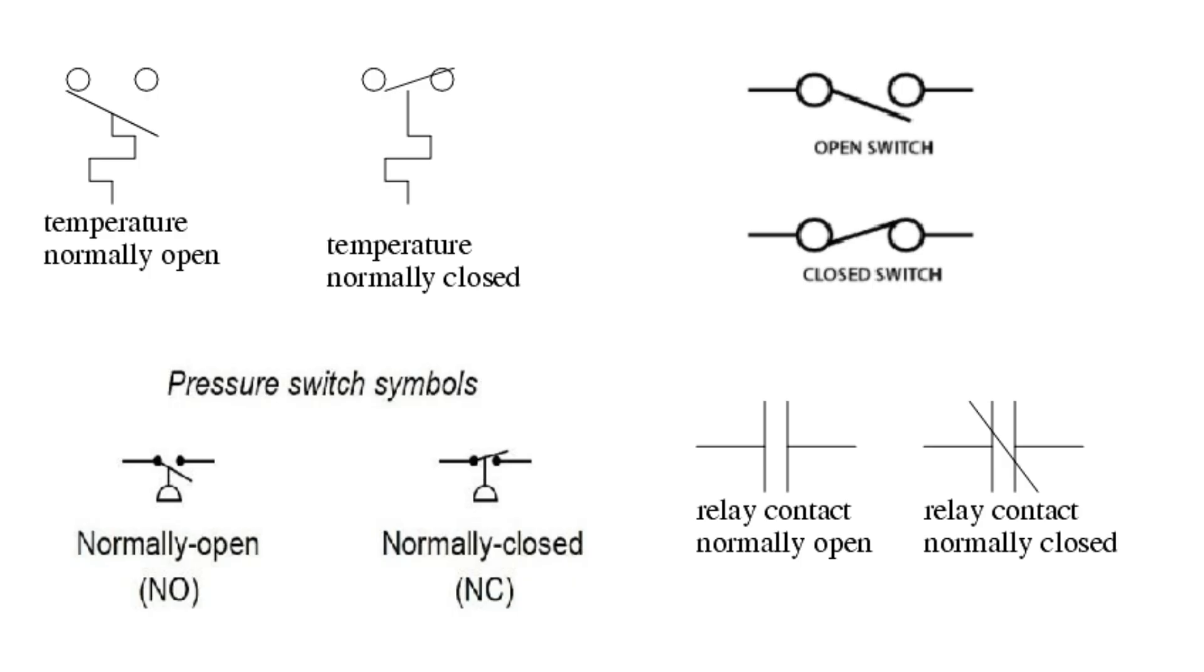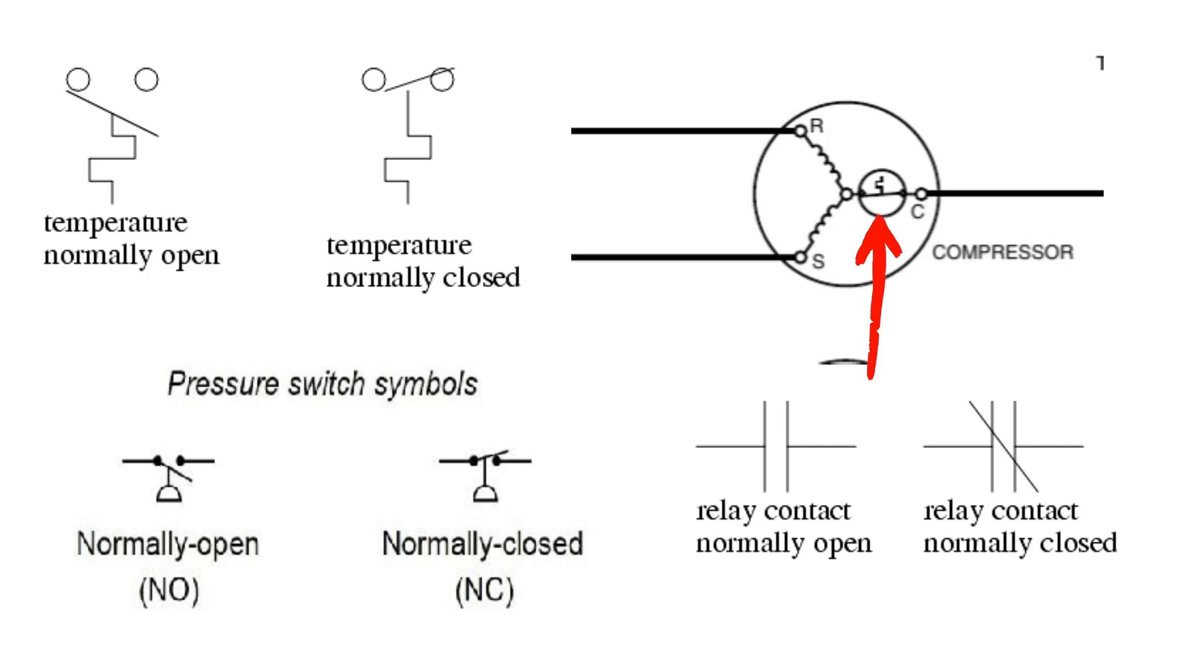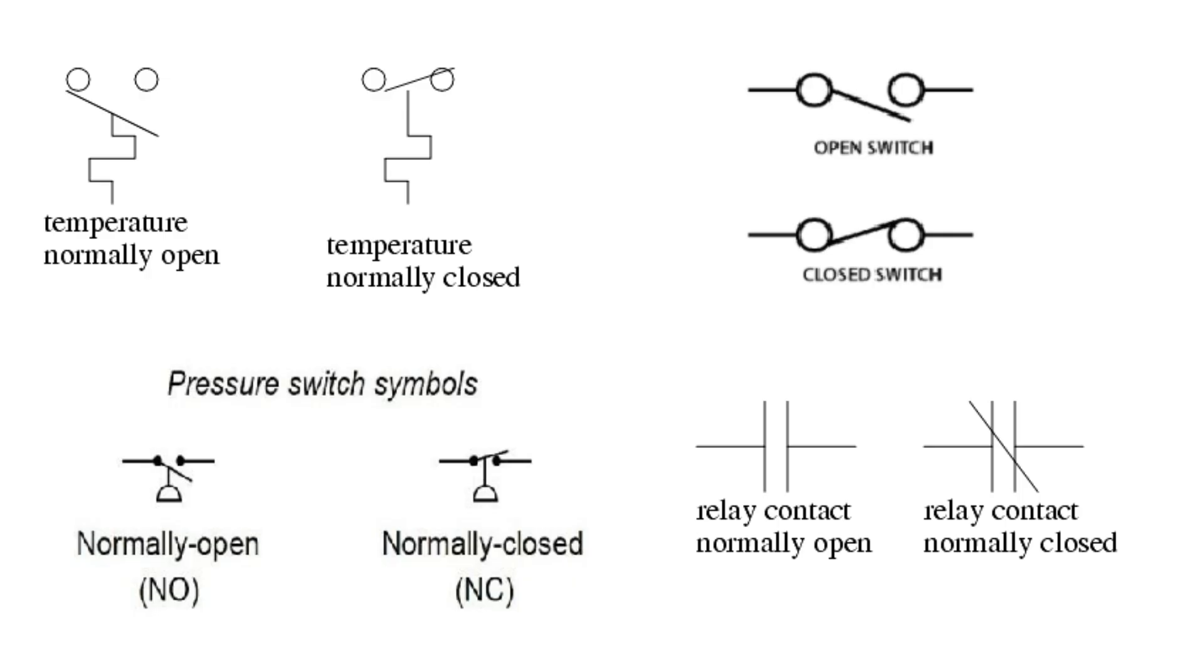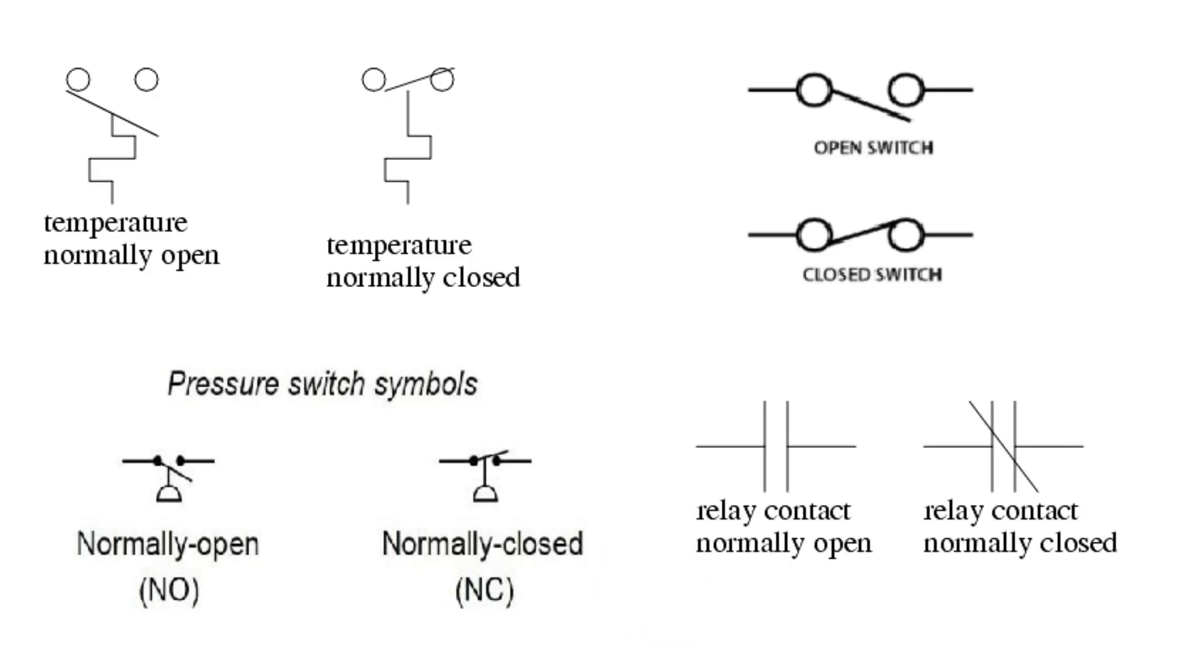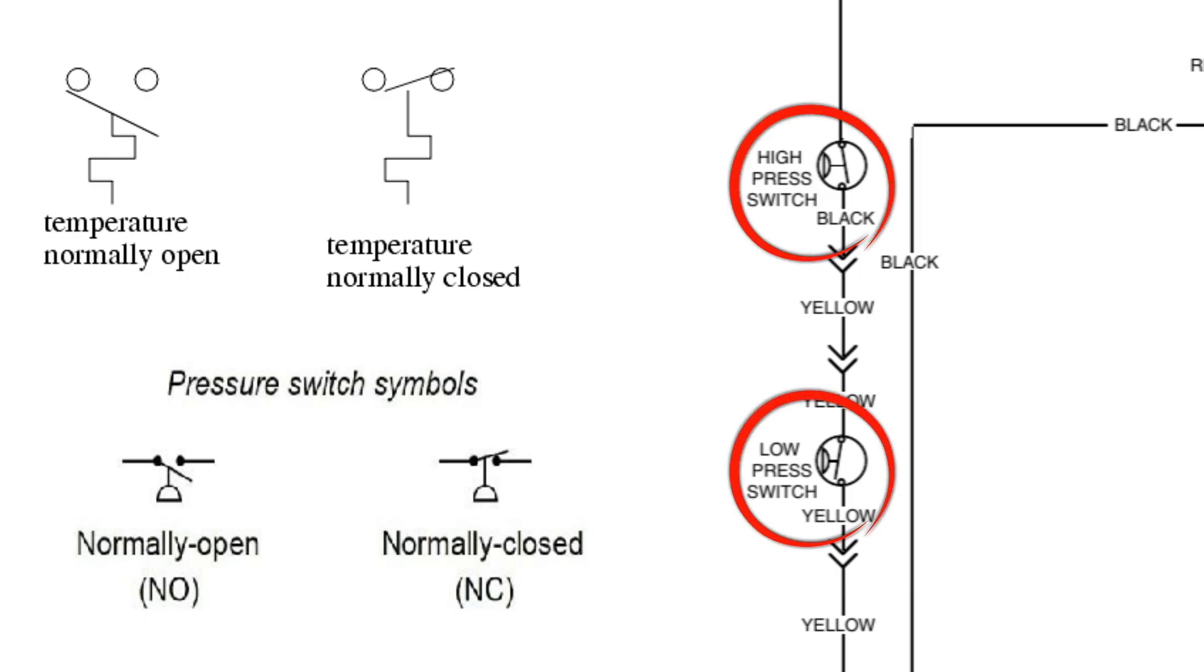So here we have typical switching symbols you're going to see very often on HVAC schematics. To the upper left here, we have temperature switches showing the normally open and normally closed state. This is something you're going to see in the compressor, such as the thermal overload switch. Up to the right, we have an open and closed switch like a light switch on our light bulb diagram. To the lower left here, we have pressure switches. You will find these on condensing units quite often.